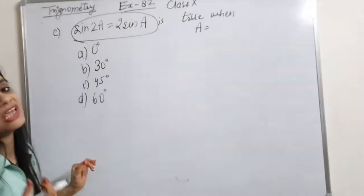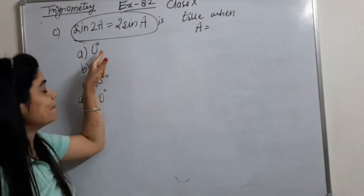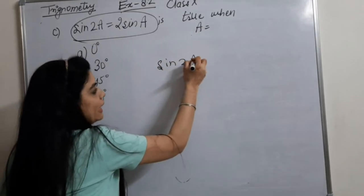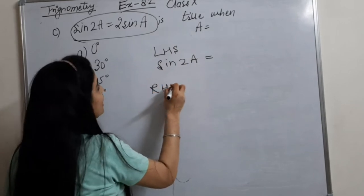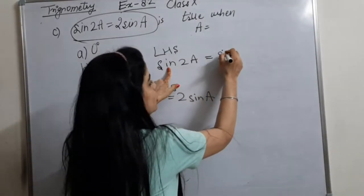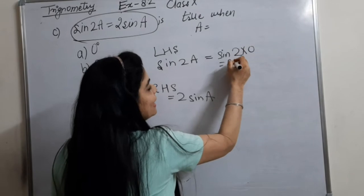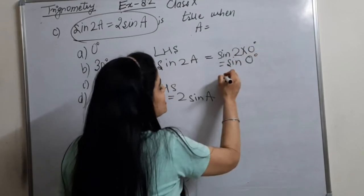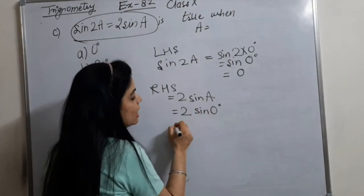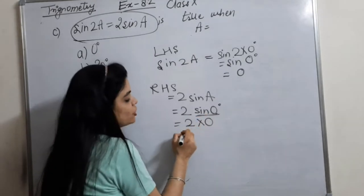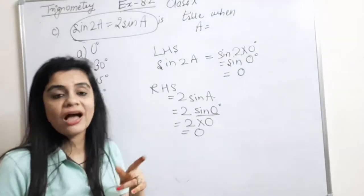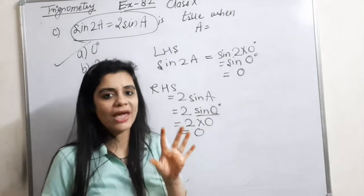They are asking which of the four options gives the value of A. Let's check: the first option is 0 degrees. LHS is sin 2A, and RHS is 2 sin A. Putting A=0: sin(2×0) = sin 0° = 0. And for RHS: 2 sin 0° = 2×0 = 0. So LHS equals RHS when A = 0°. So the first option matches and option A is correct.